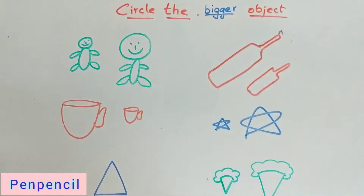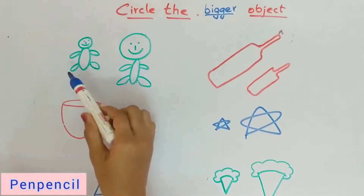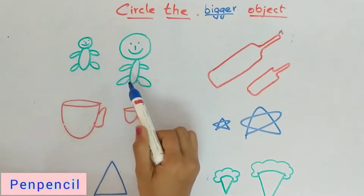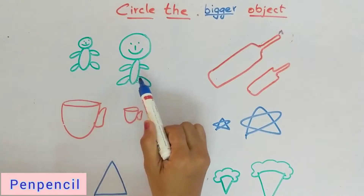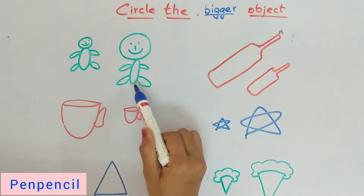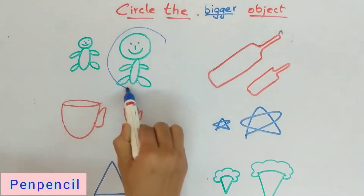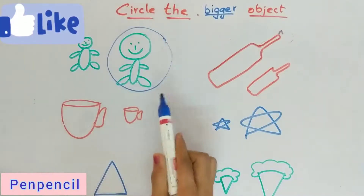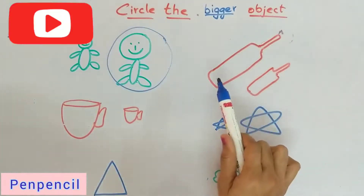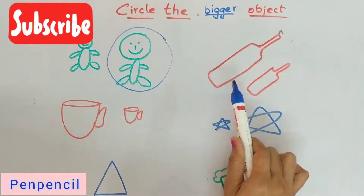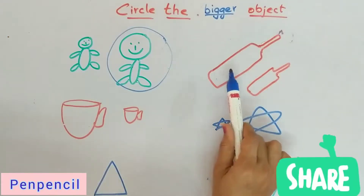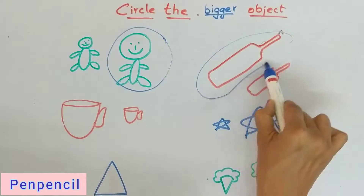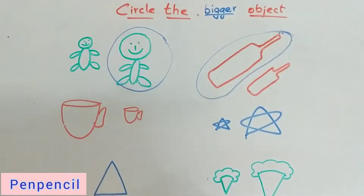Now we have to circle the bigger object. This is a small toy, this is a bigger toy — which should we circle? This one — circle the bigger one. Now the bat — come on, you tell me what we have to circle. Yes, correct — this one, this is a bigger bat.